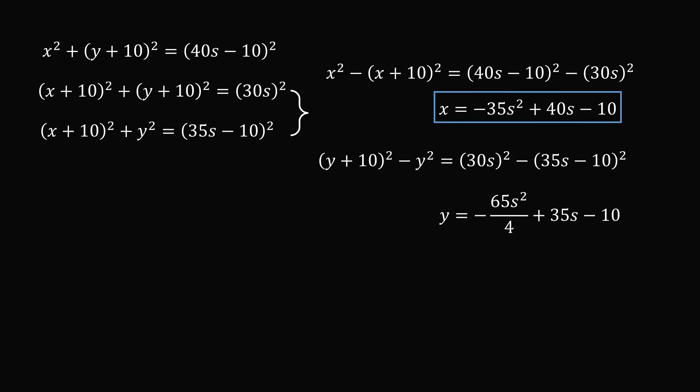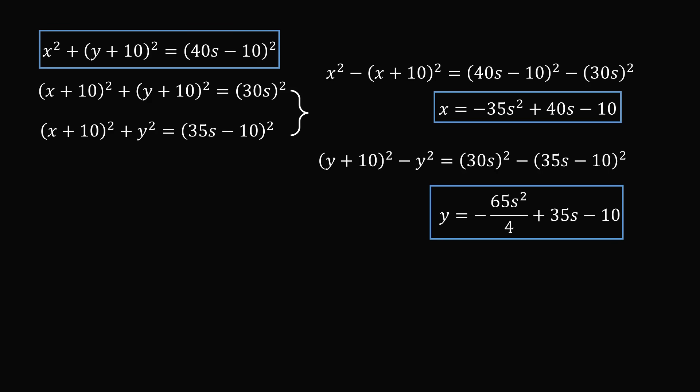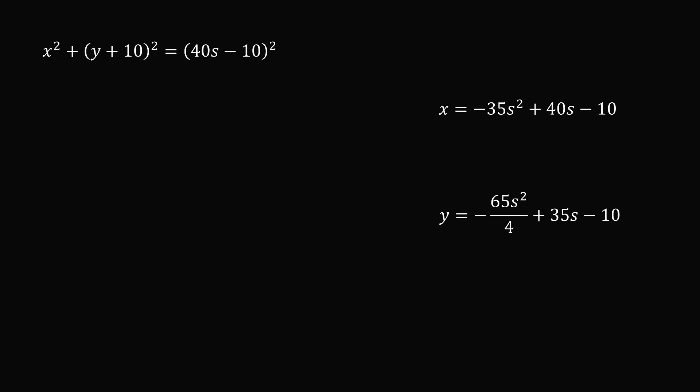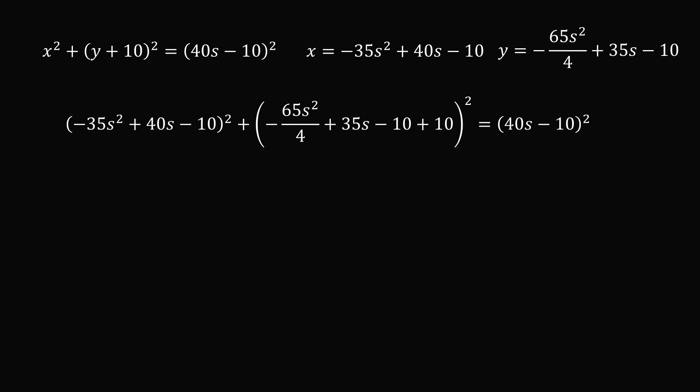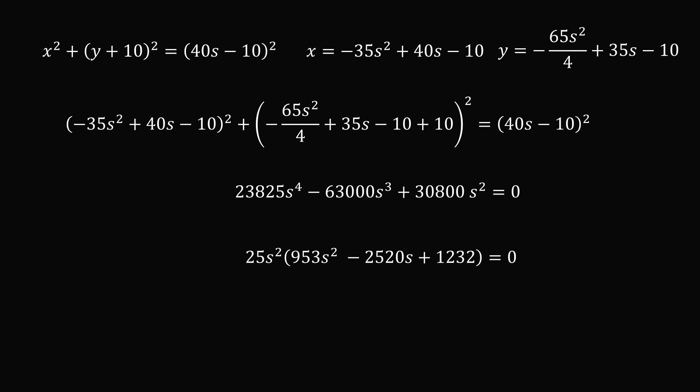We now have X in terms of S and Y in terms of S. Substituting both back into the first equation gives us an equation purely in the variable S. It's a bit tedious, but after the substitution and simplification we end up with an equation we can factor out 25S squared from, giving us an equation that's readily solvable.